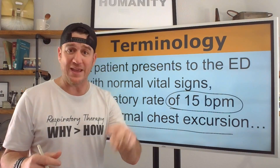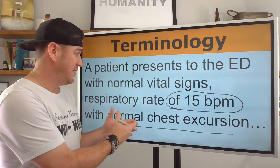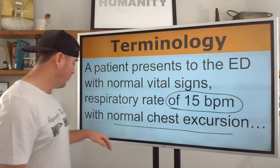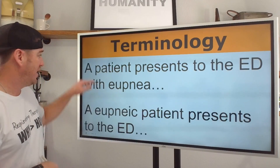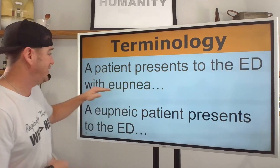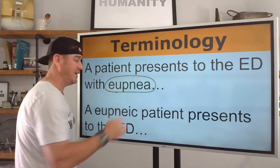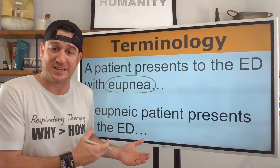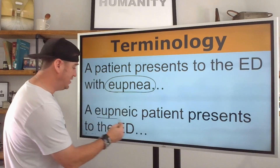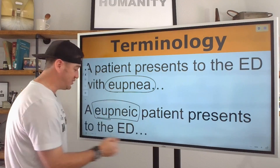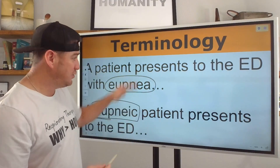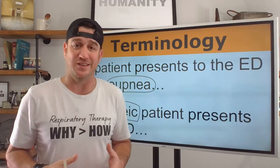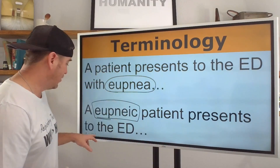In this video, I'm going to show you two different ways you might see this information. What is the term for normal breathing pattern? We could see it presented like this as well: a patient presents to the ED with eupnea. What is eupnea? Eupnea is normal resting breathing — that's what was described in the previous scenario. We may also see it presented as: a eupneic patient presents to the ED. All of these describe the same thing — a patient presenting to the ED breathing normally.